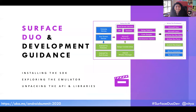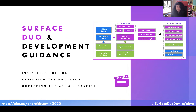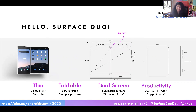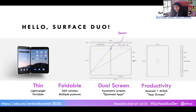Now I want to get into what I came to talk about — the Surface Duo. My goal here is to do three things: get you to install the SDK and try your app on the emulator, unpack the API and libraries to see how to adapt your app, and walk through design patterns. The Surface Duo is a dual screen device — lightweight and portable, fitting in your pocket when folded. Its uniqueness is a 360-degree rotation hinge.